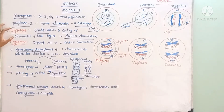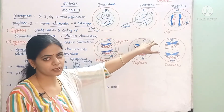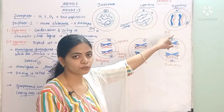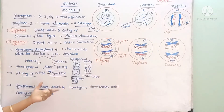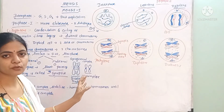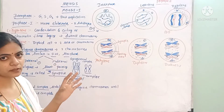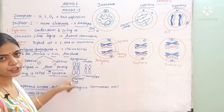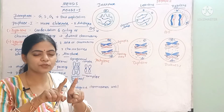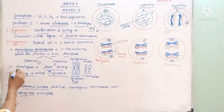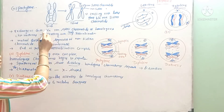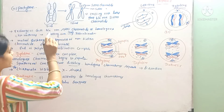So to summarize zygotene: the homologous chromosomes start pairing and this pairing is called synapsis, forming a bivalent or dyad complex. Between these two chromosomes crossing over will occur, and to stabilize that bivalent nature a synaptonemal complex is created between the two homologous chromosomes, stabilizing them until crossing over is complete. The next stage is pachytene.